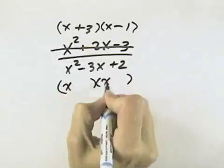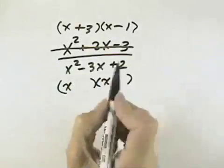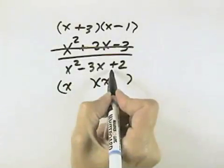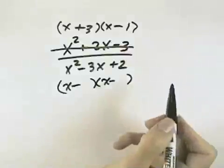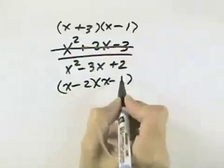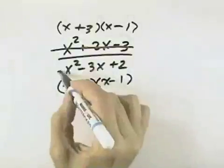For the denominator, we've got, again, the x's as our first term. Because the second sign's positive, both signs will be negative because they'll both be the same. And so that means it's a minus 2 and a minus 1, which gives us a negative 3x in the middle.